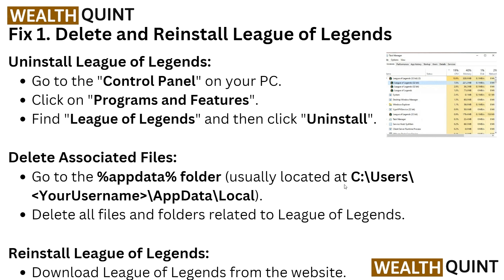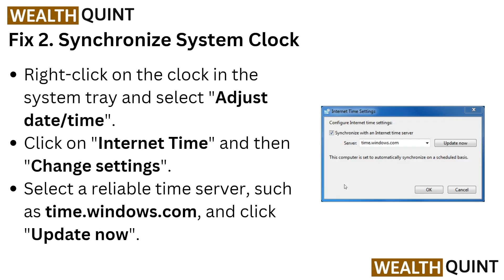If the first fix doesn't work and the friend list is still not loading, move to Fix 2: synchronize the system clock. Right click on the clock in the system tray and select Adjust Date and Time. Click on Internet Time, then Change Settings, select a reliable time server such as time.windows.com, and click Update Now.